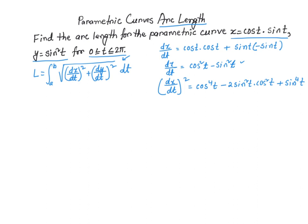Similarly, I'm going to find dy/dt. Using the chain rule, dy/dt = 2sin(t)·cos(t). If I square it, (dy/dt)² = 4sin²(t)·cos²(t).